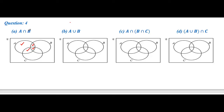Then we have to identify set B. This region, this region, this region, and this region all belong to set B. Now we have identified both set A and B. When there is intersection, we shade the double tick area. You can see here the double ticks are in this area, so this is our final shaded region.